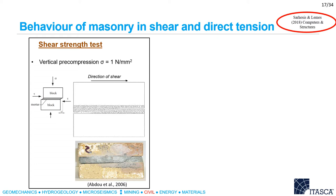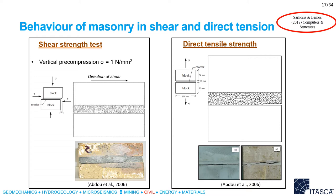A similar computational approach was also adopted to simulate the shear and direct tensile strength tests. Since failure in this case occurs in the mortar rather than the bricks, only the mortar was discretized into inner mortar particles. From the simulation of the shear strength test, failure occurred at the brick-to-mortar interface followed by a diagonal crack in the mortar itself. Also in the direct tensile strength test, depending on the properties of the inner mortar particles and brick-to-mortar interface, failure can occur at the brick-to-mortar interface or in the mortar itself.